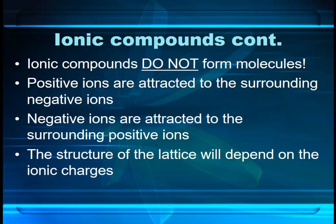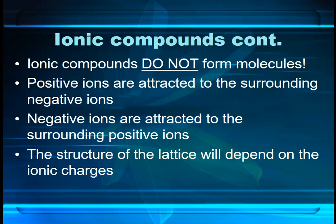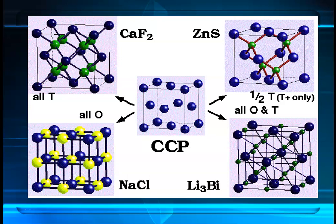The way the lattice looks depends on the formula — the charges of the ions and the ratio of the ions. Sodium chloride is a nice simple one. Here are a few examples: the bottom-left is sodium chloride, a plus-one and minus-one ion. Compare that to the top-right, which is zinc sulfide — still a one-to-one ratio, but zinc and sulfur are plus-two and minus-two, so the shape of the lattice is different. Calcium fluoride in the top-left is a one-to-two ratio, and Li₃Bi in the bottom-right is a three-to-one ratio.